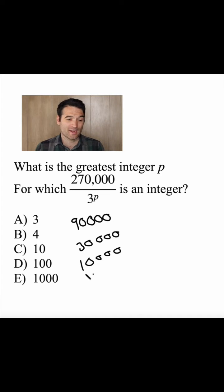But I can't go any further, right? I can't divide 10,000 by 3 because then it's not an integer anymore, and that's what the problem said it had to be.